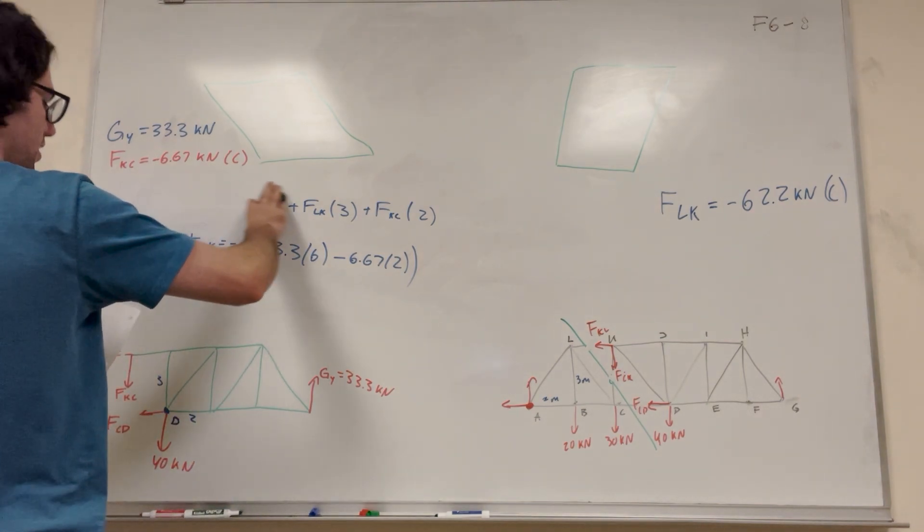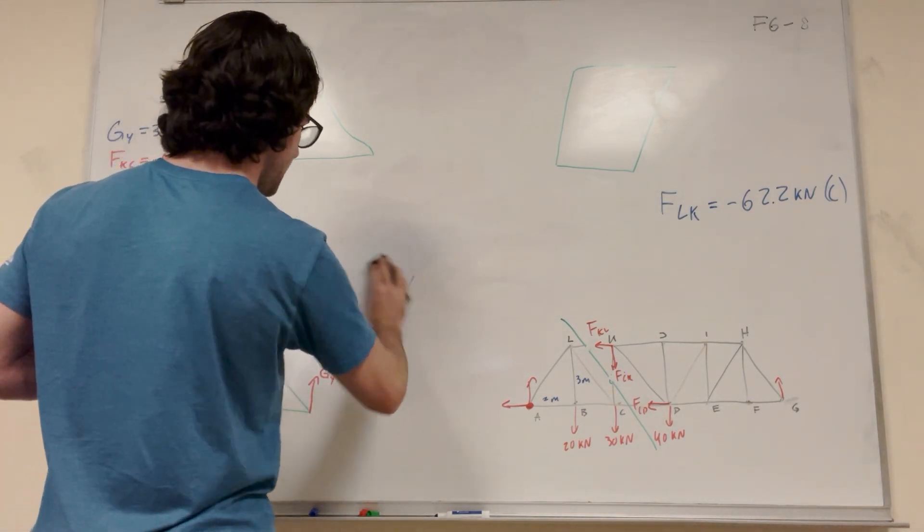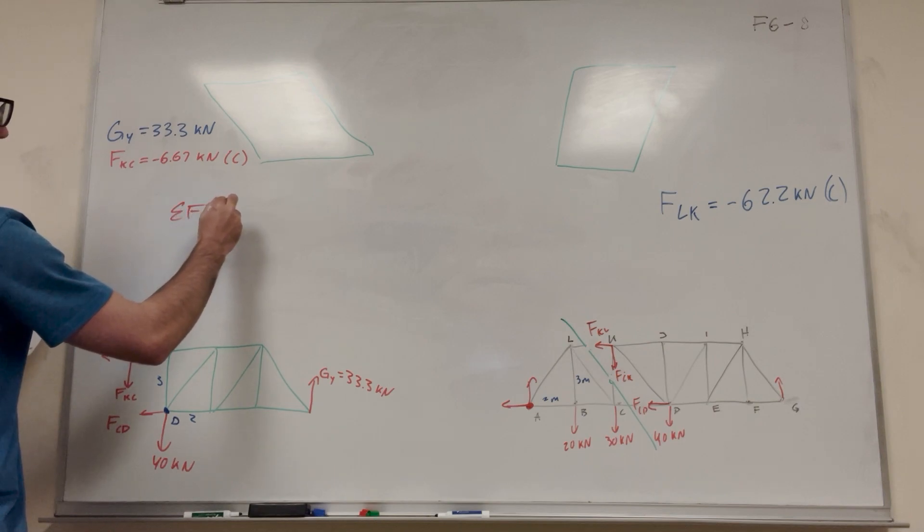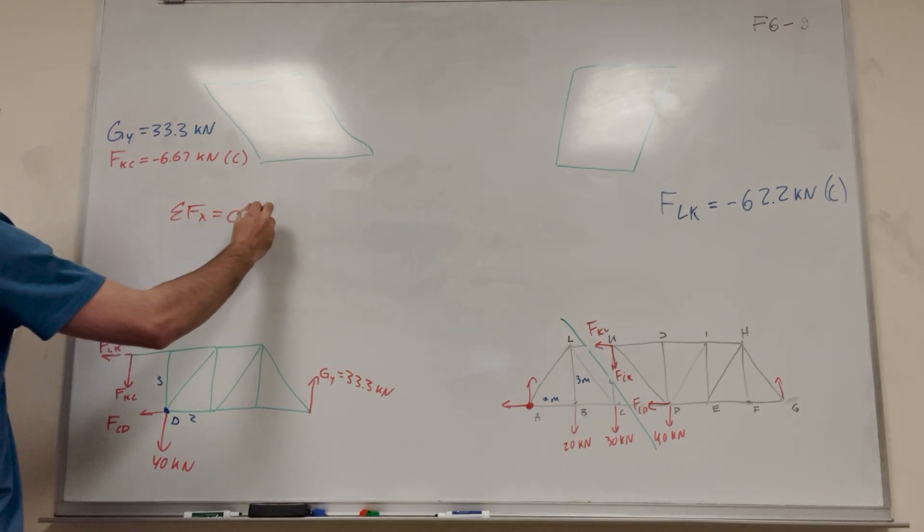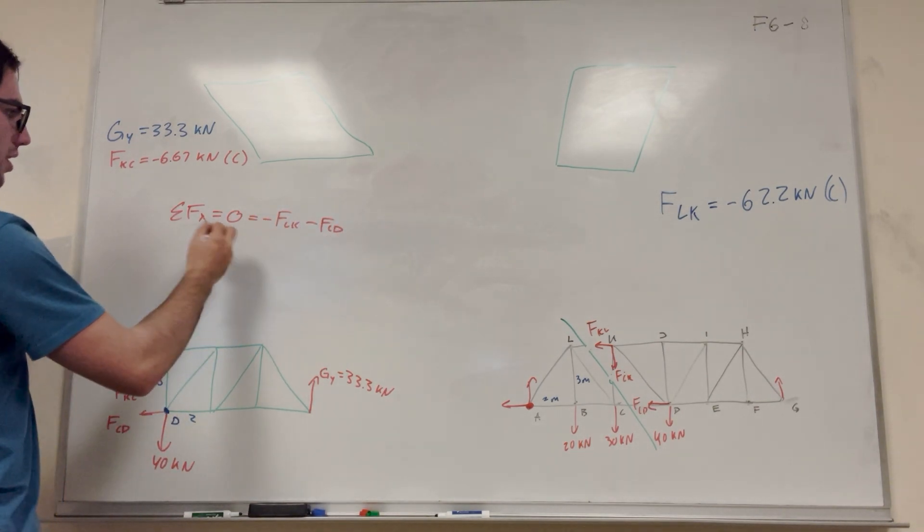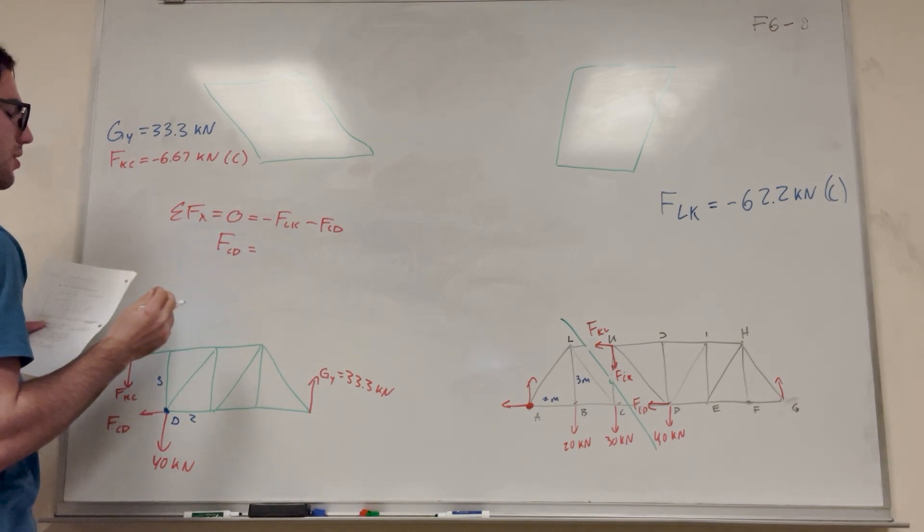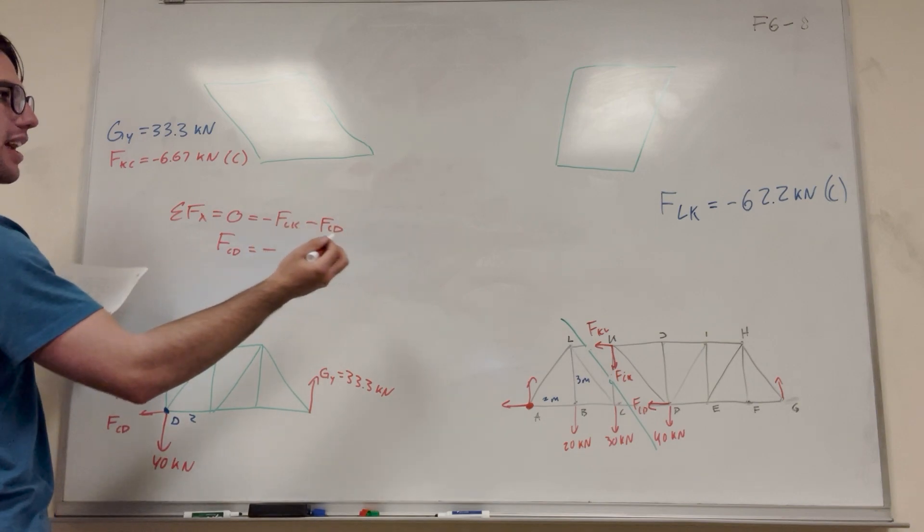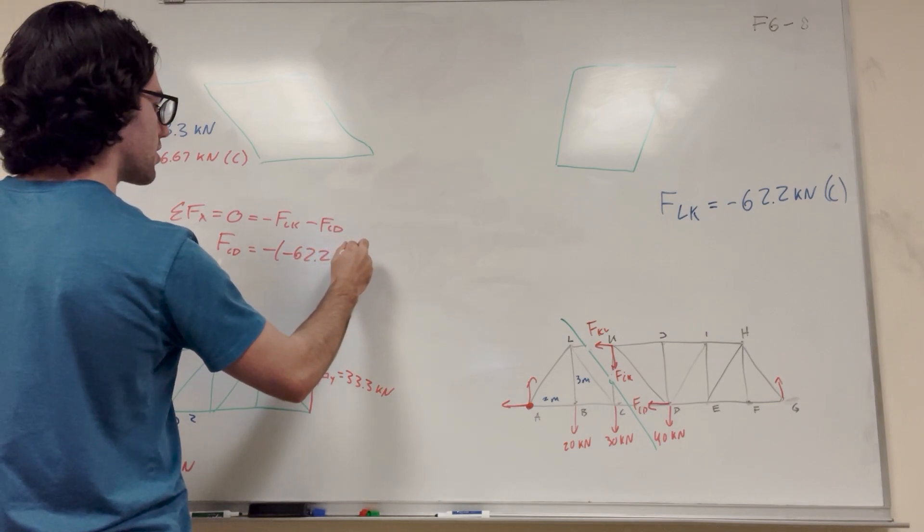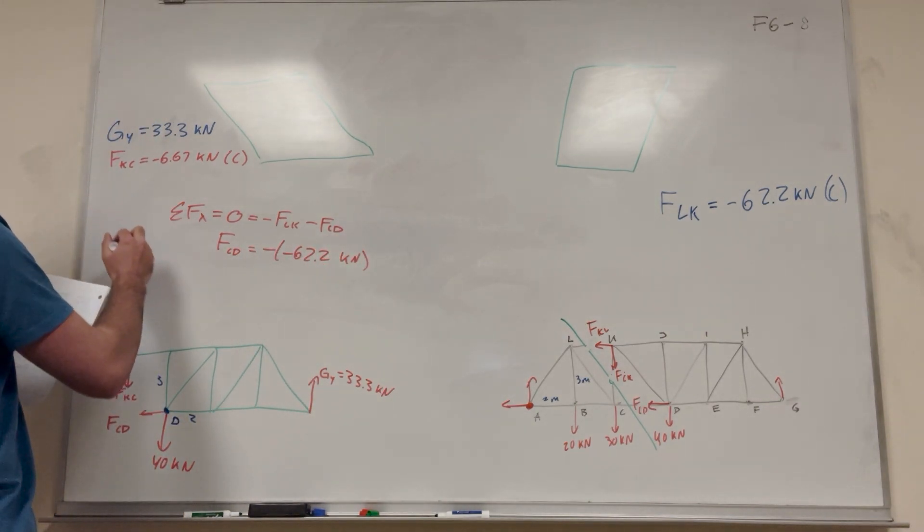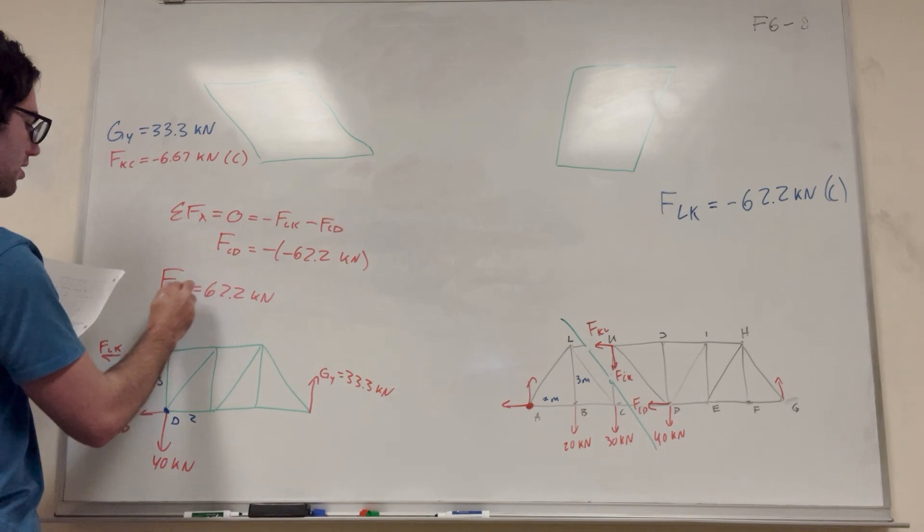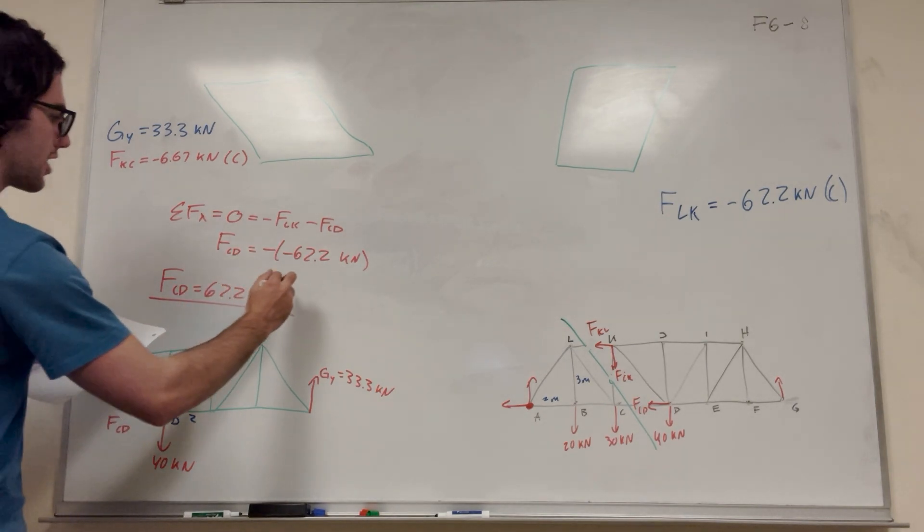So then all we have left is CD. And CD is going to be easy to find because I can just do some of the forces in the X. So if you do some of the forces in the X direction, and we know it's equal to zero, so we're going to say FLK is pushing negative FLK, and then FCD minus FCD. So of course we're looking for CD, so FCD is equal to minus FLK, I mean, so minus negative 62.2 kN. So the negatives are going to cancel out, and you're going to get that FCD is equal to 62.2 kN. Cool. And so that's tension, of course, if it's a positive number.